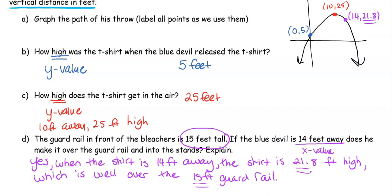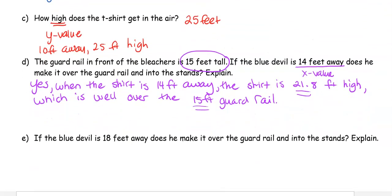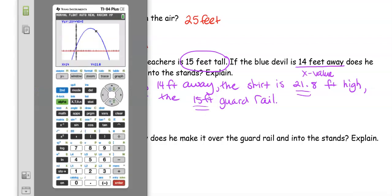Part E: If the Blue Devil is 18 feet away, does he make it over the guard rail into the stands? Explain. We're going to go back to our graph, 2nd Calc again.